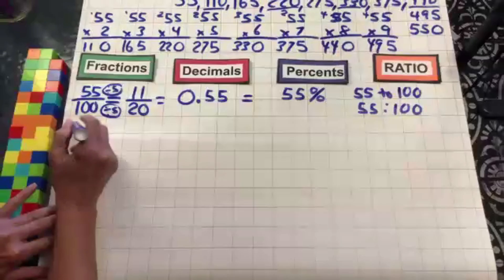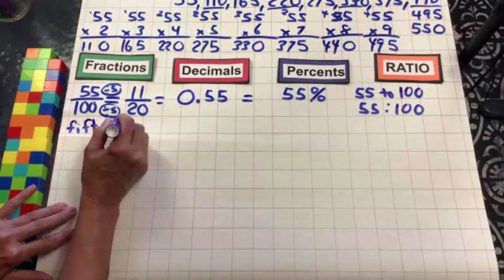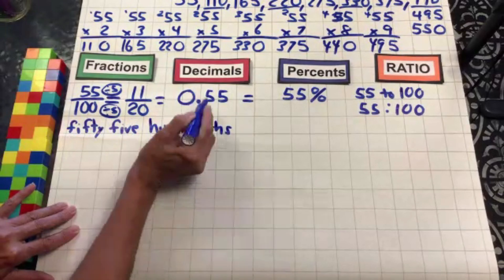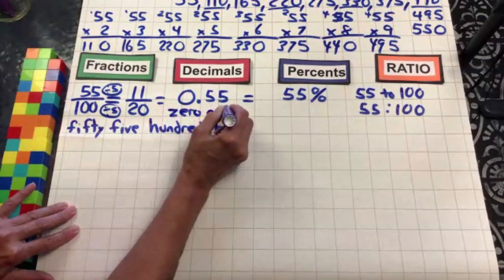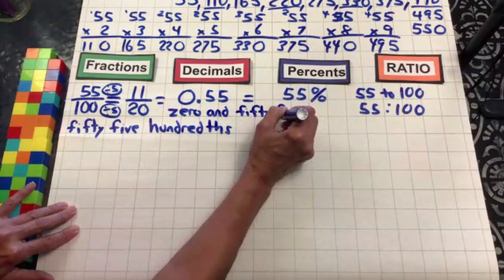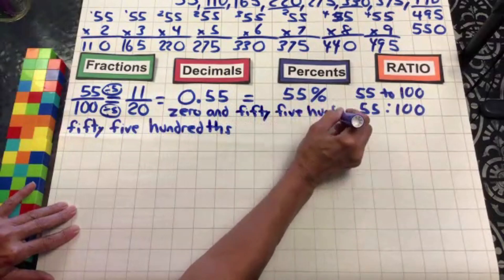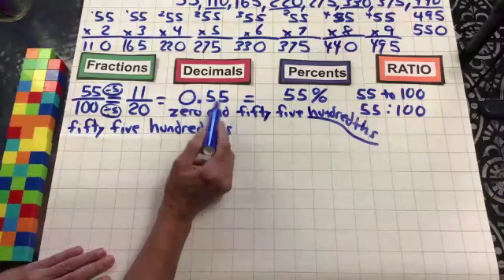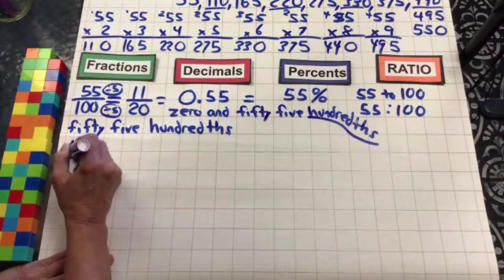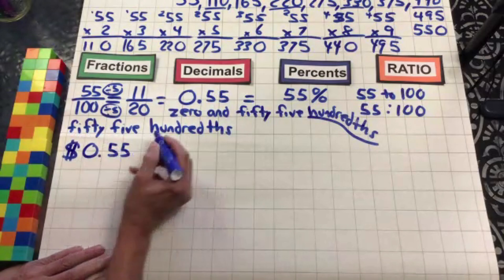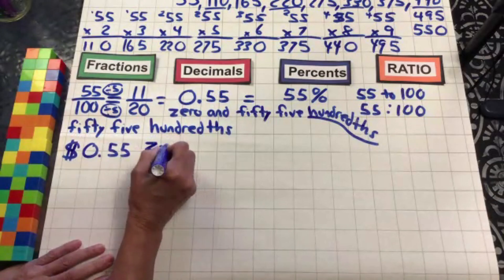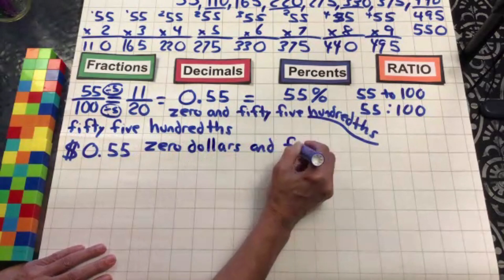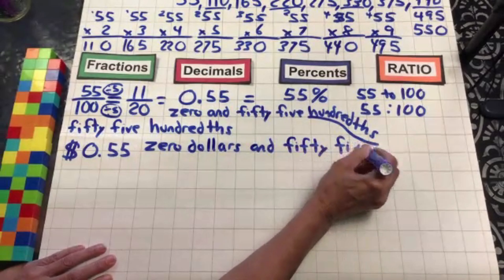Let's write this in words. Our fraction is fifty-five hundredths. Our decimal is zero and fifty-five hundredths. And if we were going to put the decimal in money form, we would say zero dollars and fifty-five cents. That's how we write it with digits, and here's how we write it in words: zero dollars and fifty-five cents.